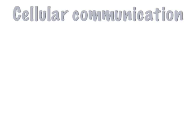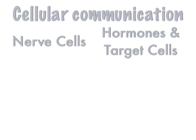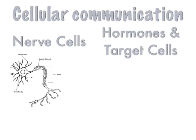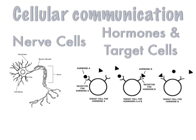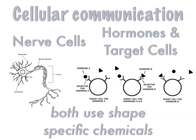How do cells talk to each other? In cellular communication there are two main examples: nerve cells and hormones with target cells. Neurons can talk to each other through a space called the synapse. In the endocrine system, hormones can talk to specific cells by sending round or triangular shapes to catch onto things called receptors. What the Regents wants you to know is that both are shape-specific — they use shape-specific chemicals to talk to each other.